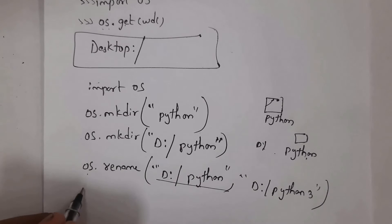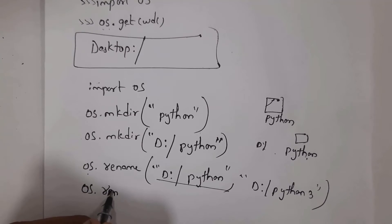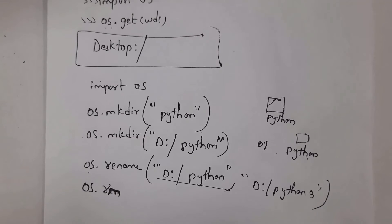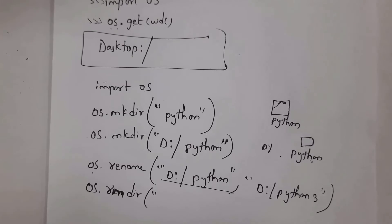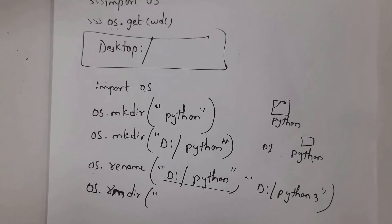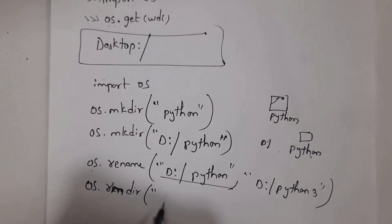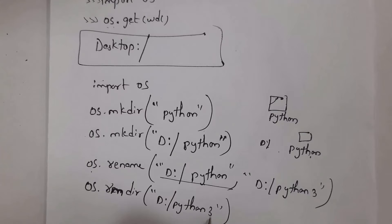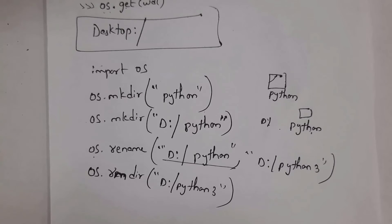I want to delete the folder 'python3'. Write 'os.rmdir("python3")'. The rmdir function — remove directory — deletes the specified folder. Inside the brackets, write the folder name you want to remove, and it will delete that folder.